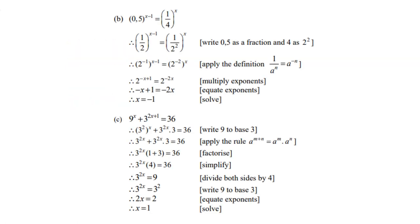B: 0.5 to the power of x minus 1 equals a quarter x. Now 0.5 is a half, so write it as a common fraction, a half. And a quarter, 4 is 2 squared.